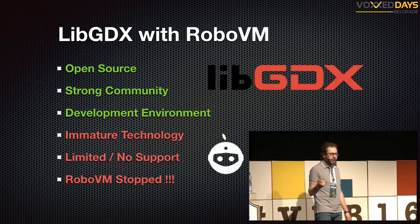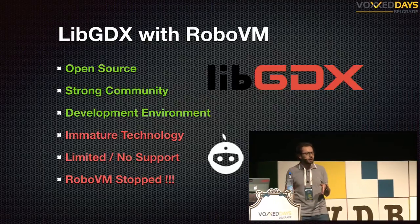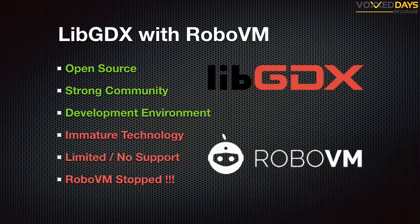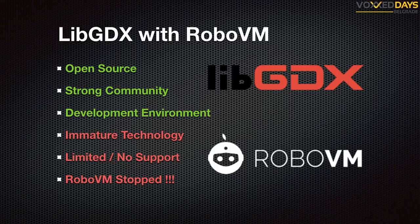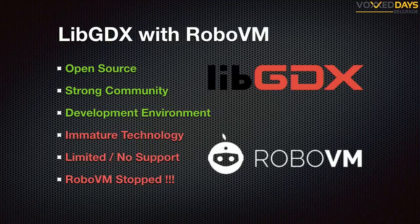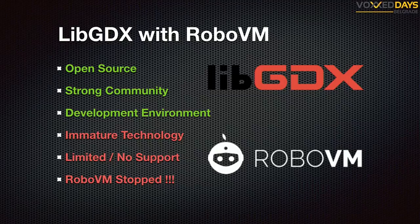The next option was LibGDX, which we were already using in our Android games. We had the experience, it has a strong community, it's open source, and the development environment is even better than Android Studio. But to use LibGDX as a cross-platform technology you have to combine it with RoboVM, and all the downsides came from RoboVM — it was immature, not doing what it needed to do, and had no support. We built an experimental game with it, but the development process was quite painful. After our decision, RoboVM was acquired by Xamarin, Xamarin was acquired by Microsoft, and they just stopped the project. We were lucky not to select that combination.